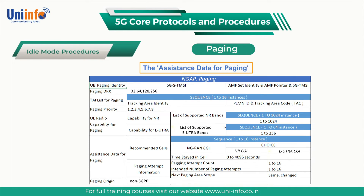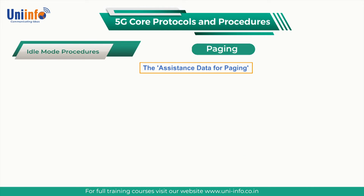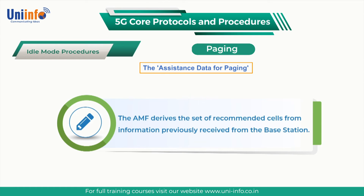If the time is greater than 4095 seconds, the AMF signals a value of 4095 seconds. The base station can use this information when selecting the cells to broadcast the RRC paging message. The AMF derives a set of recommended cells from information previously received from the base station.